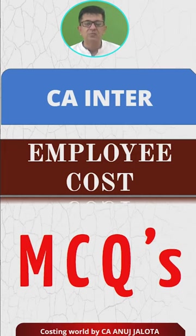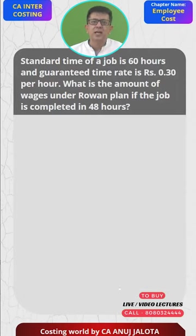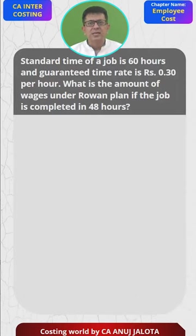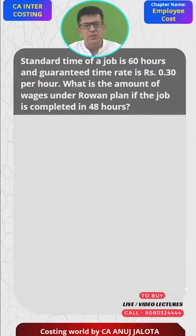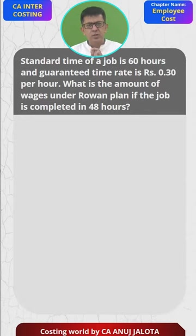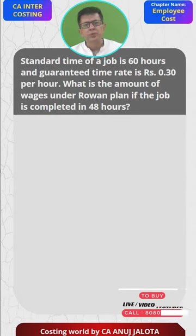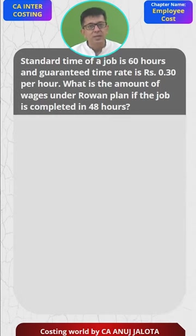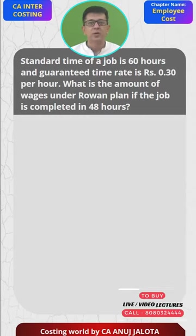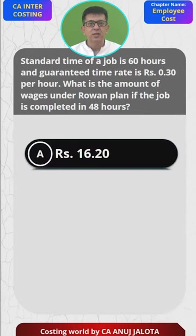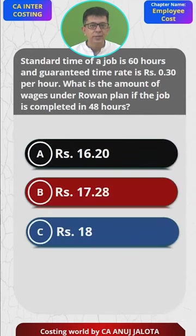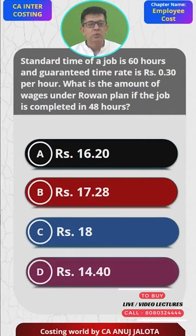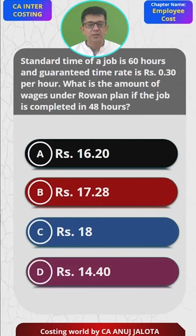So let's start. Standard time for a job is 60 hours. Guaranteed time rate is 0.3 per hour — that's your basic wage rate, also called the guaranteed wage rate. What is the amount of wages under the Rowan Plan if the job is completed in 48 hours? The four options are: A) 16.2, B) 17.28, C) 18, and D) 14.4. Please pick up your calculators, pause the video, and comment with the correct answer.